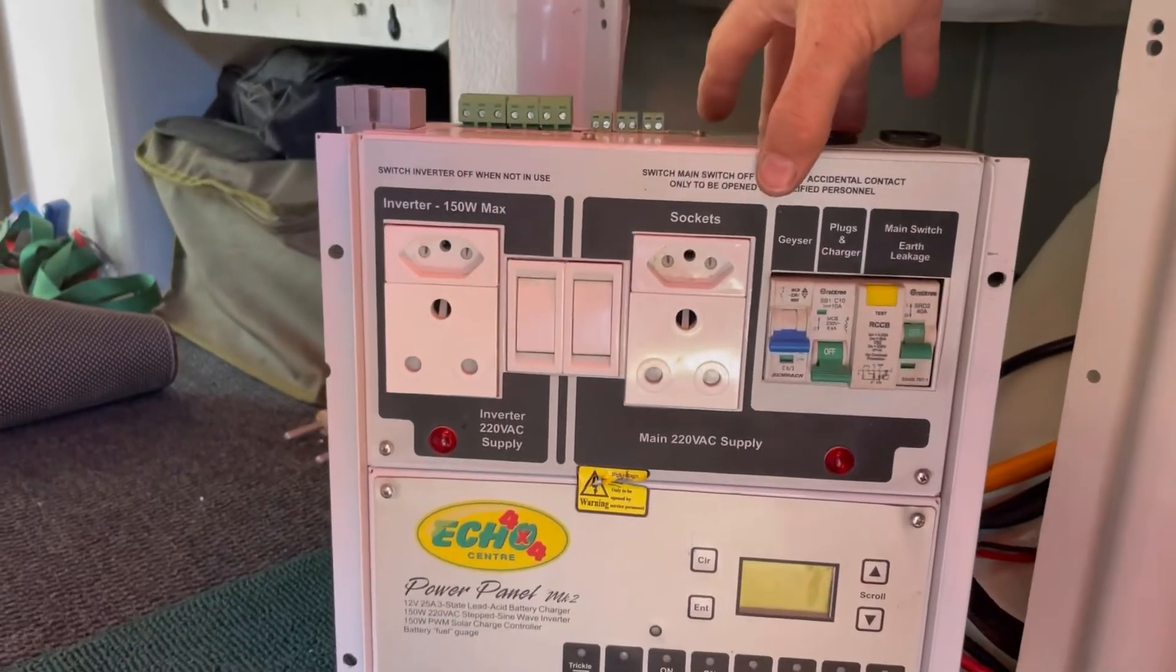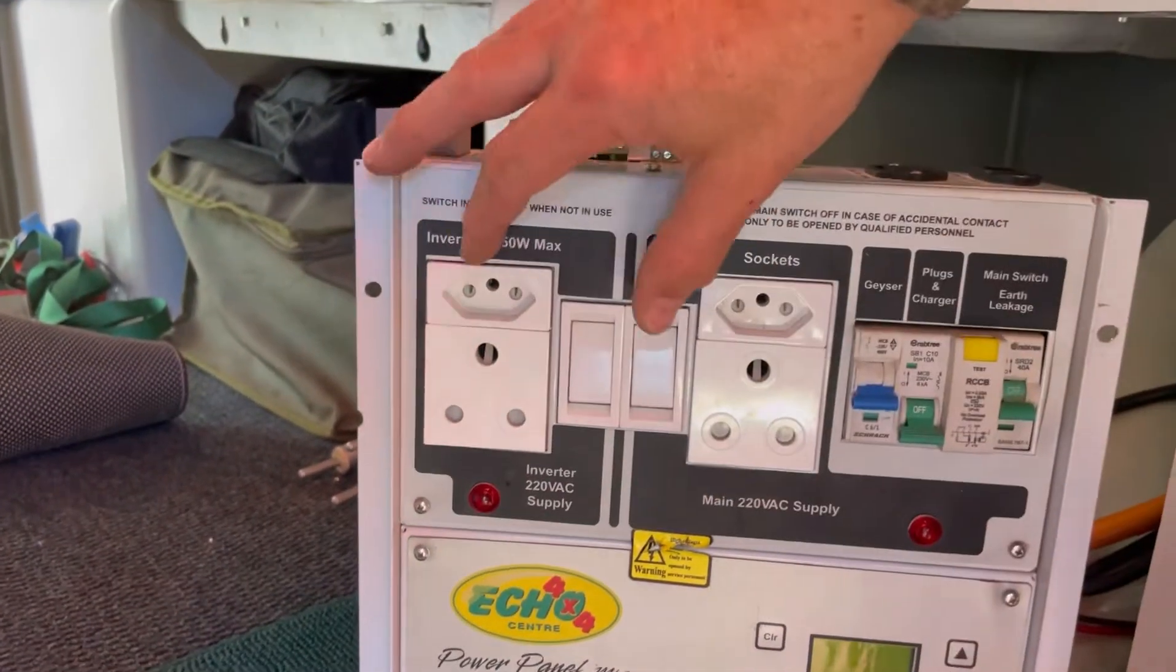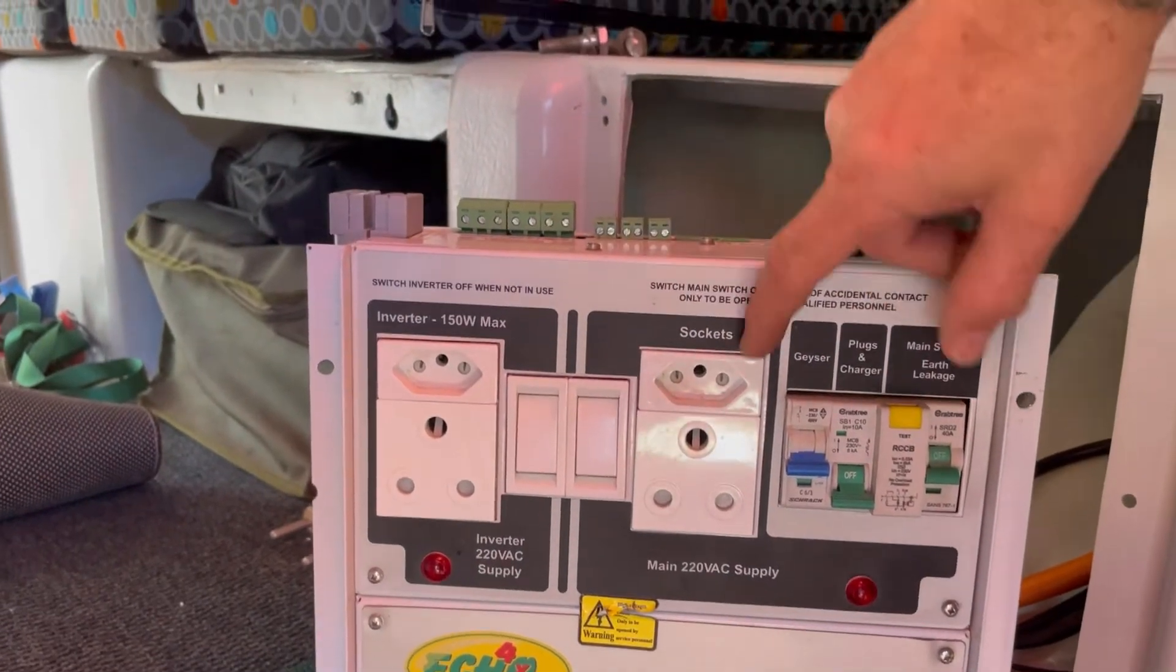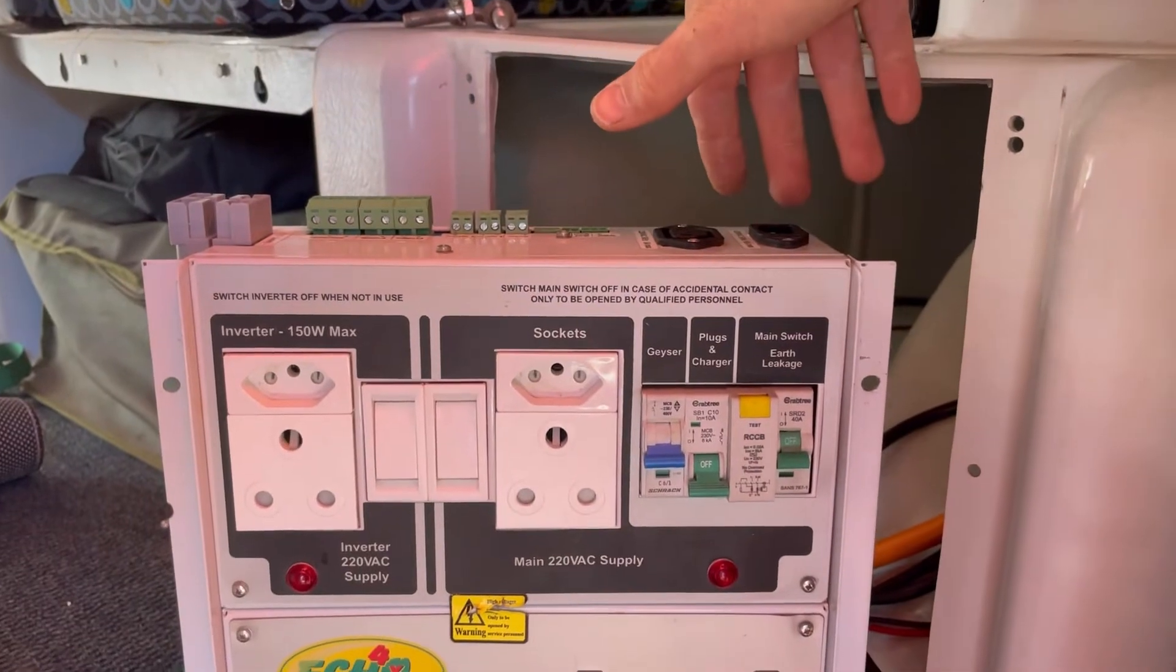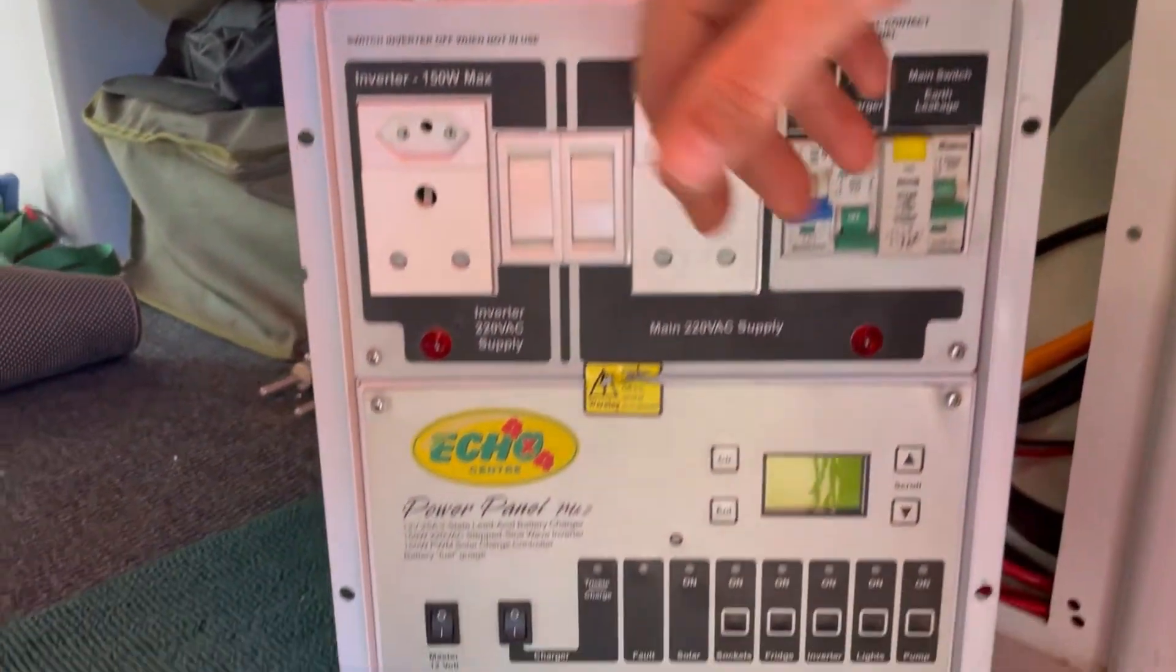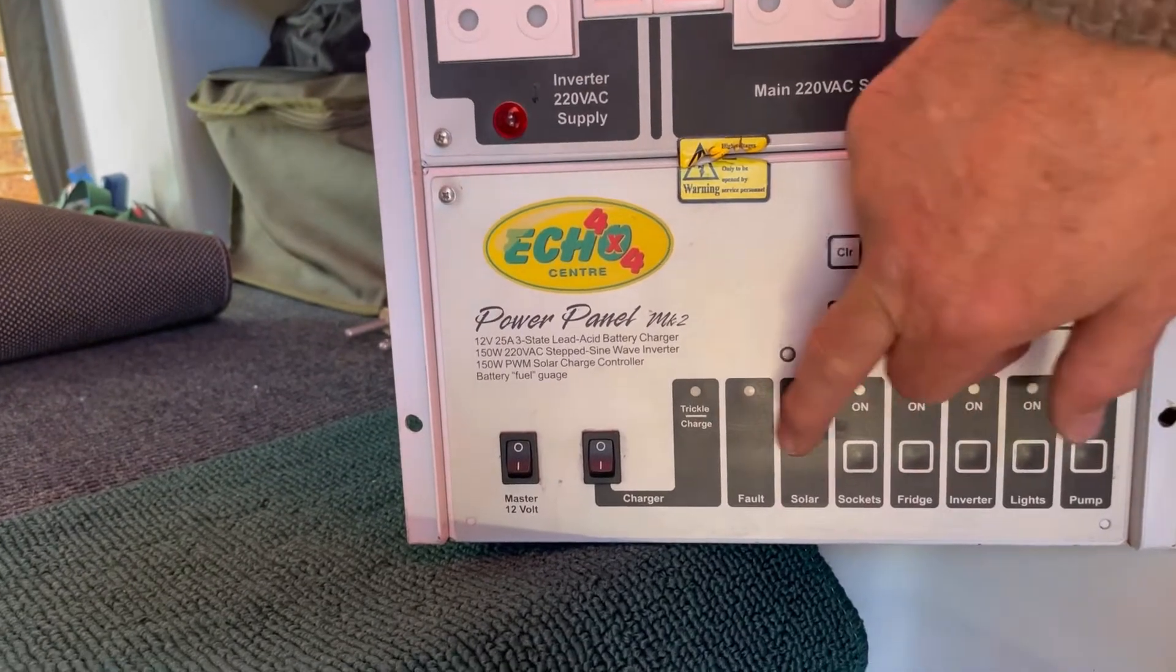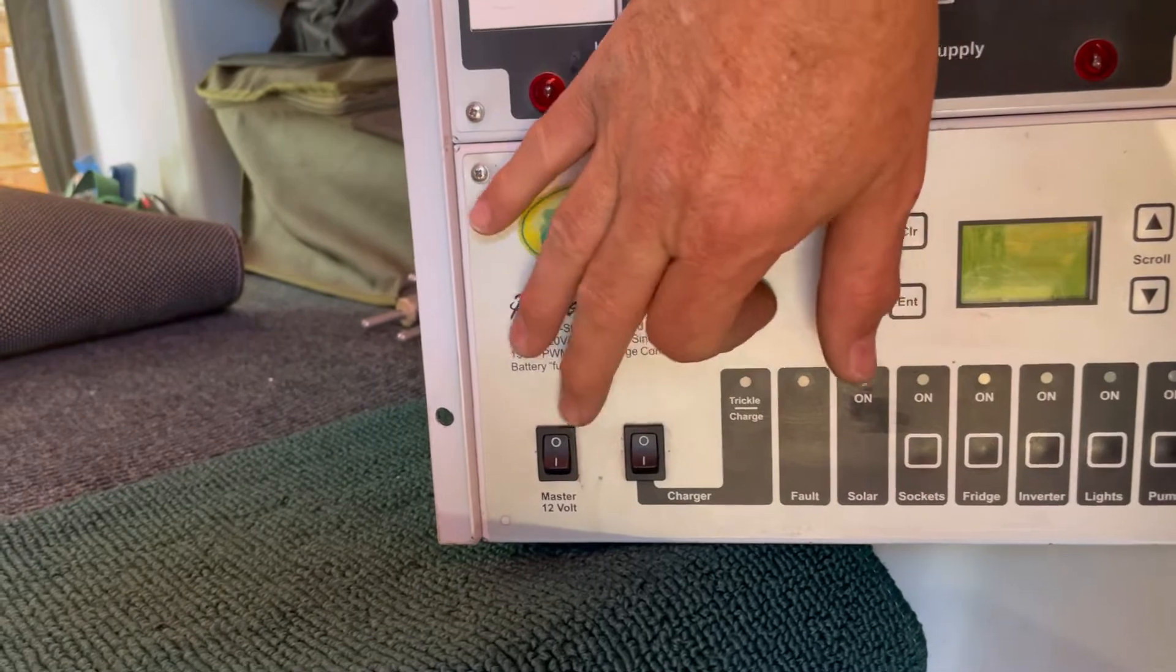The panel is separated into 220 and 12 volts. We've got an inverter, sockets via mains input, input coming in on the top which is connected on the outside of the caravan, and a panel with a display with switches for the various 12 volt circuits and a switch for the charger and the mains.